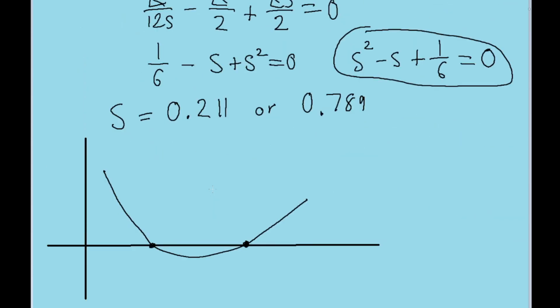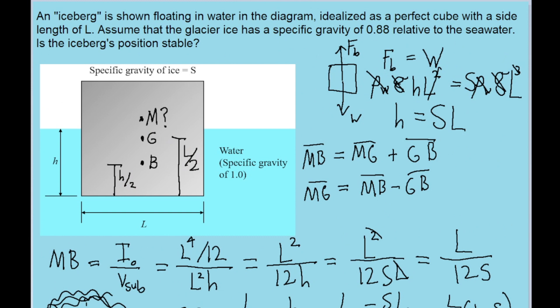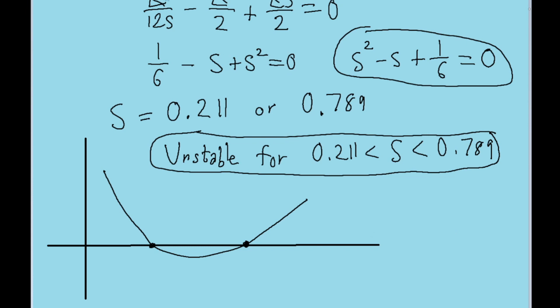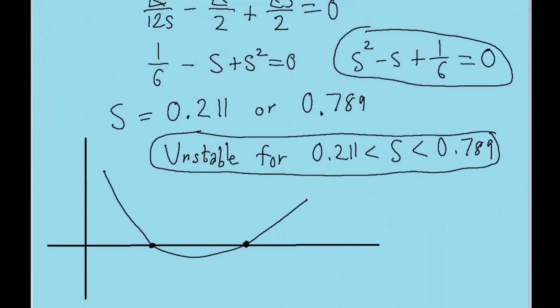So the iceberg is only stable as long as s, the specific gravity of the ice, is either less than 0.211 or greater than 0.789. Unstable for the case of 0.211 less than s less than 0.789. And this tells us that this iceberg is in fact stable because the specific gravity given by the problem is 0.88, which is outside of this range and is in the range of stability.